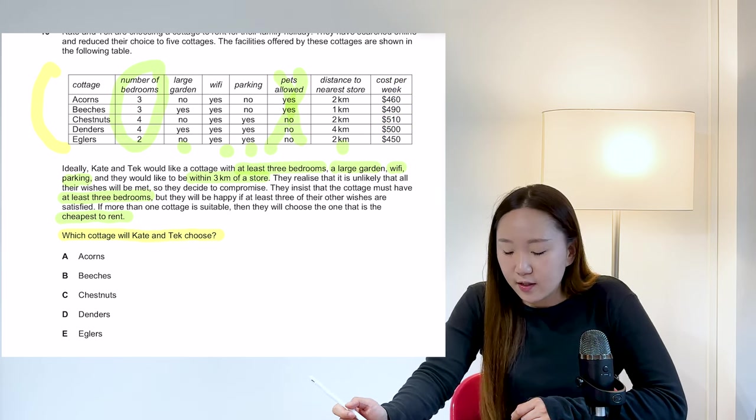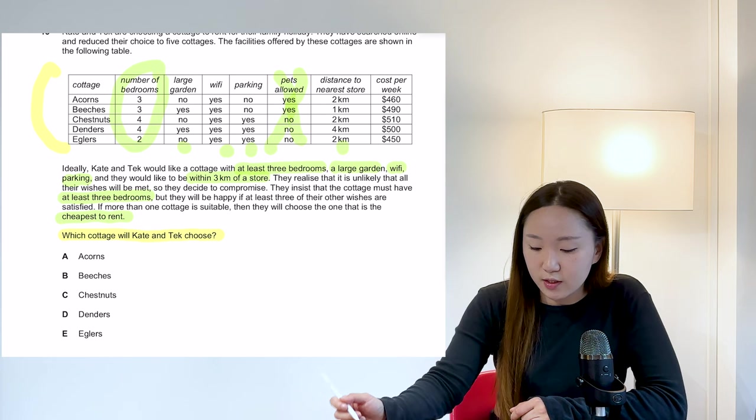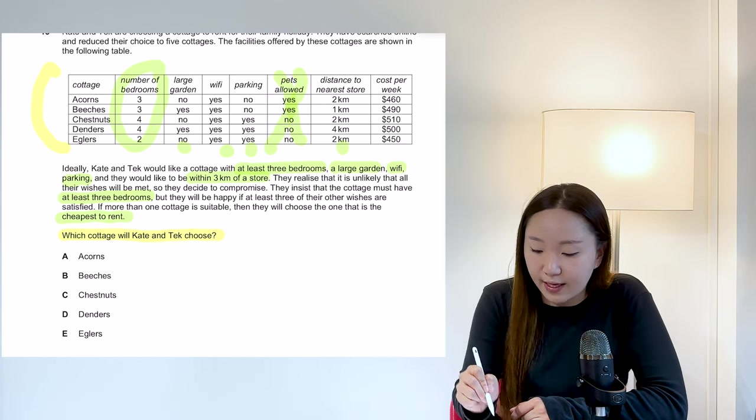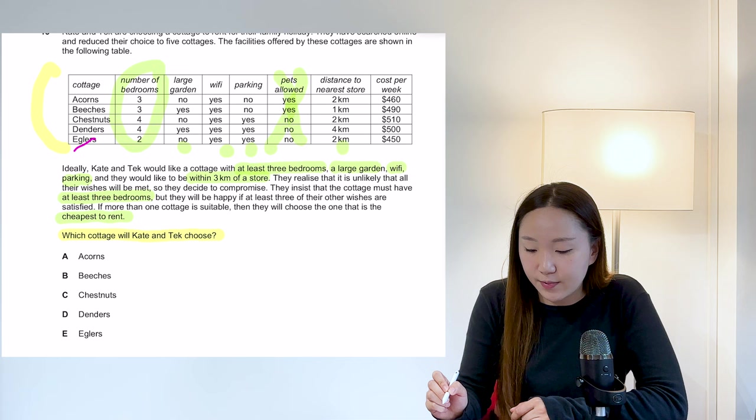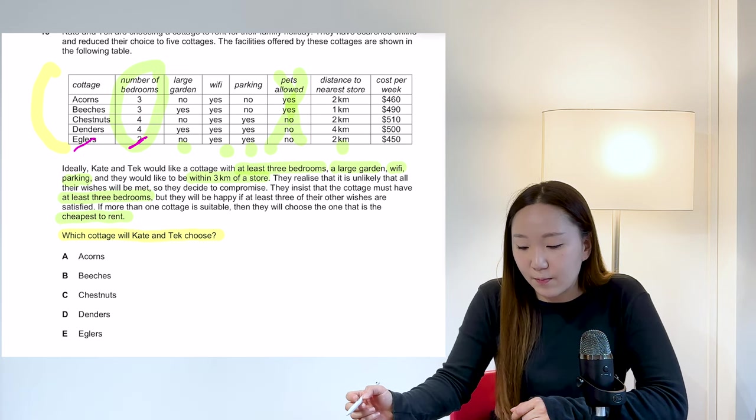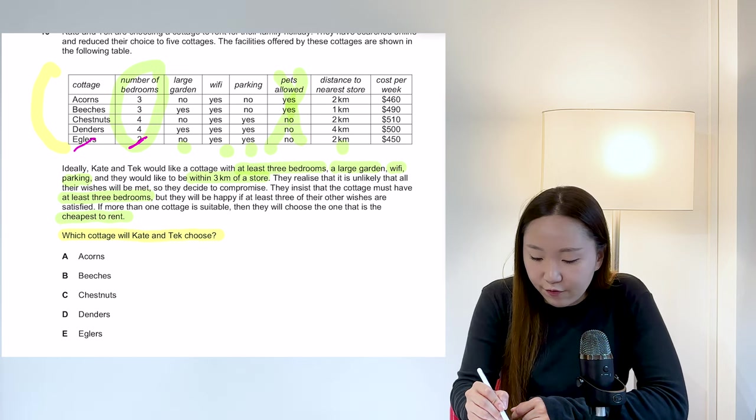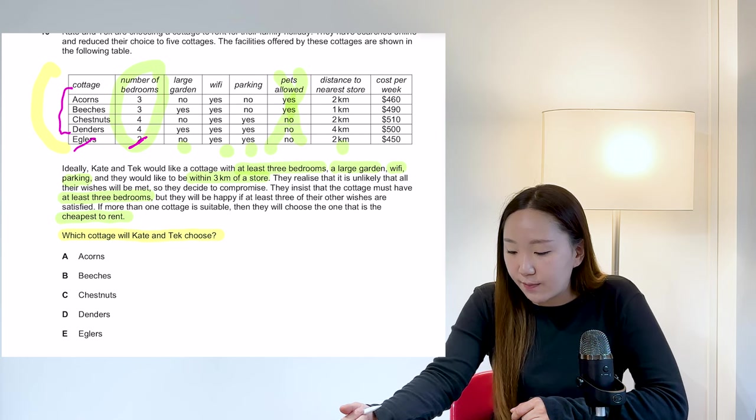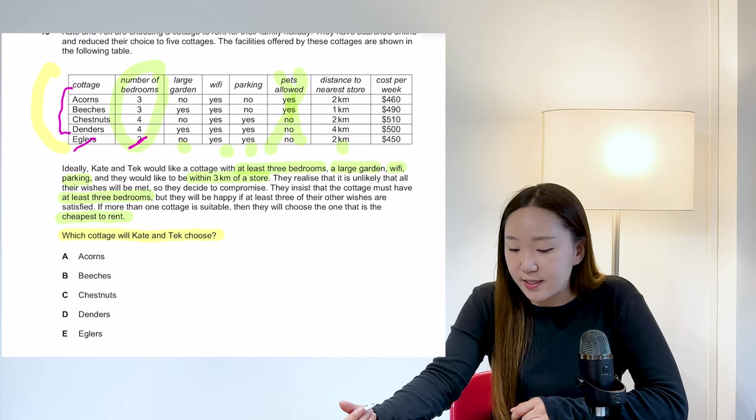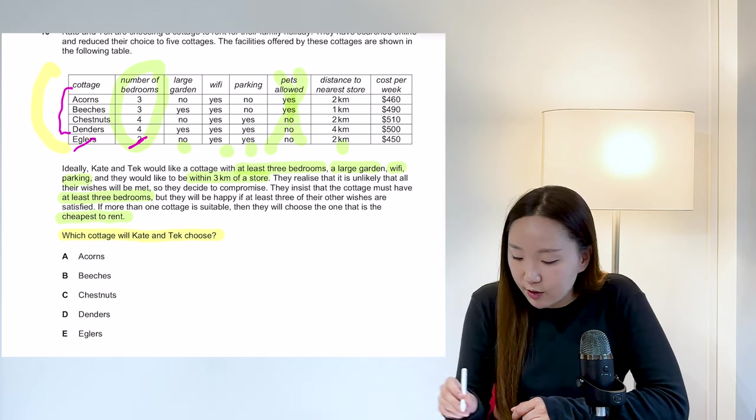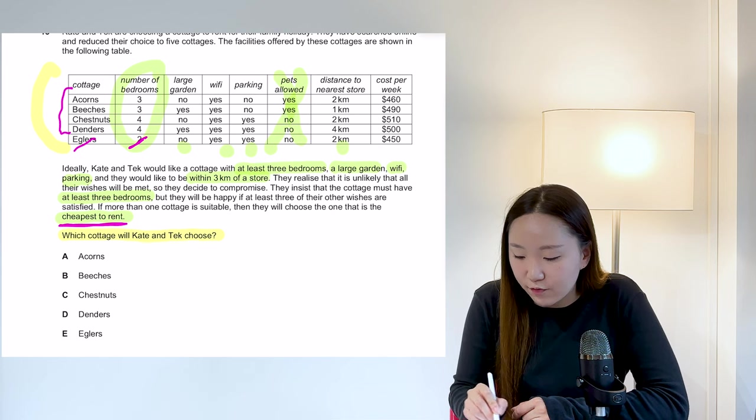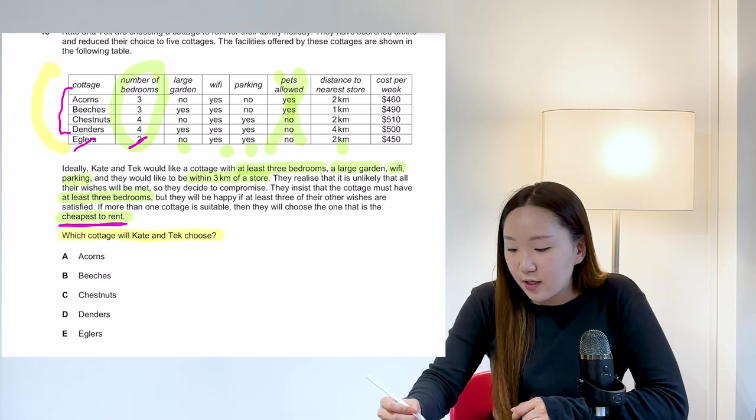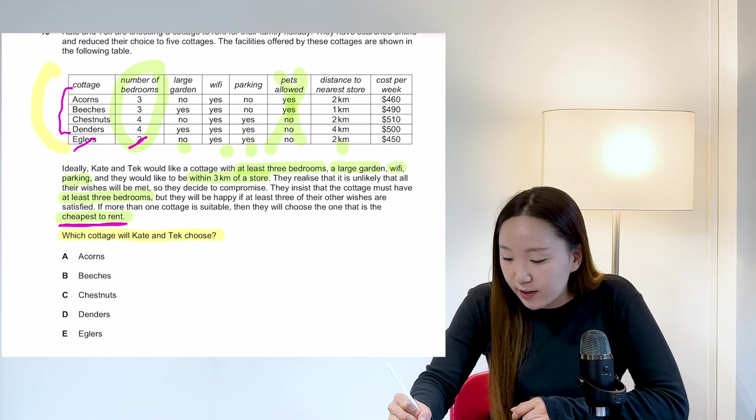So just to make this kind of quicker to do, first of all, just cut out the one that you know can't be the case, which is obviously going to be Eggler's here because it doesn't have the required number of bedrooms. Now you're left with four options, but when you think about, okay, which order should you look at these in? I would personally look at, because they're asking you to find the cheapest to rent of the conditions met. So rather than checking all four, just go in this order.